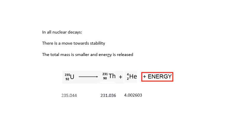Before we go, we've talked about fission and fusion, but a lot of what we've covered applies to all nuclear decays. In all nuclear decays — alpha, beta, gamma — it's always a move towards stability. The daughters are always more stable than the parents. The total mass is smaller and energy is released. For example, in this alpha decay of uranium-235 going to thorium-231 plus an alpha particle, if you work out the difference in mass on the left-hand side and right-hand side — the mass defect — you can work out the energy released. For any decay, mass turns into energy. It's a move towards stability.